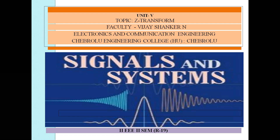In yesterday's class we completed some part of the introduction to Z-transformation, and found the Z-transformation of a^n·μ(n). If x(n) = a^n·μ(n), the Z-transformation we got is X(z) = 1/(1 - az⁻¹). This is the first example.